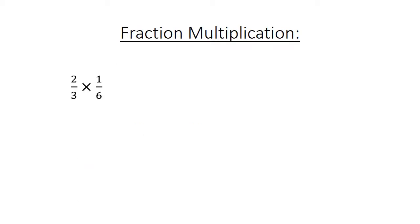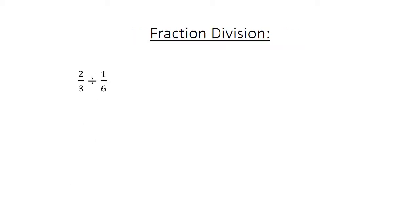Fraction multiplication: 2 over 3 times 1 over 6 equals 2 over 18. We simplify to get 1 over 9.